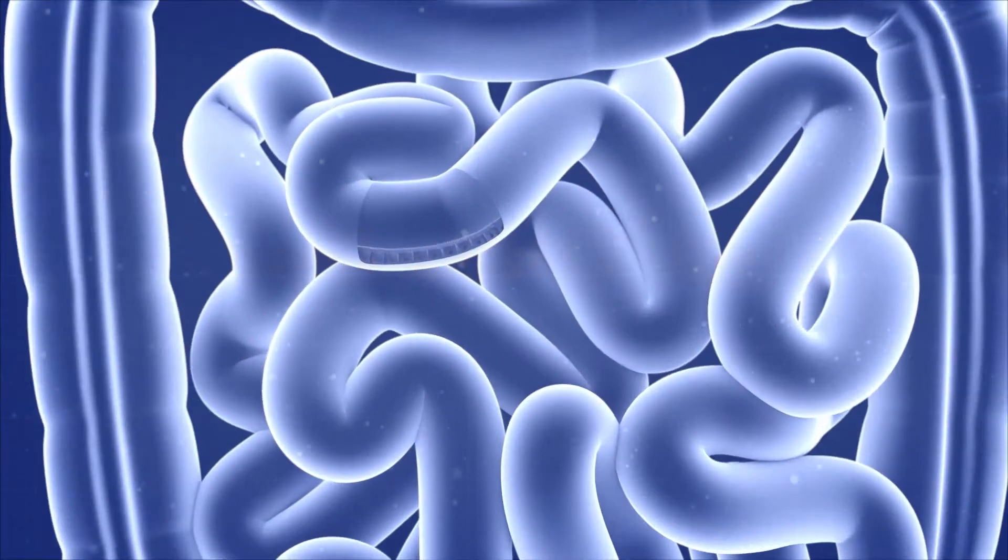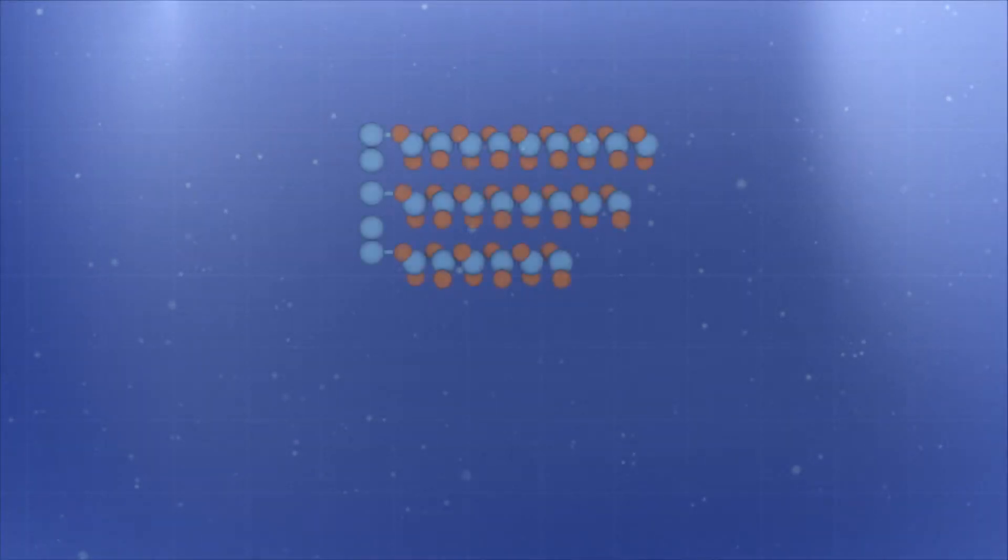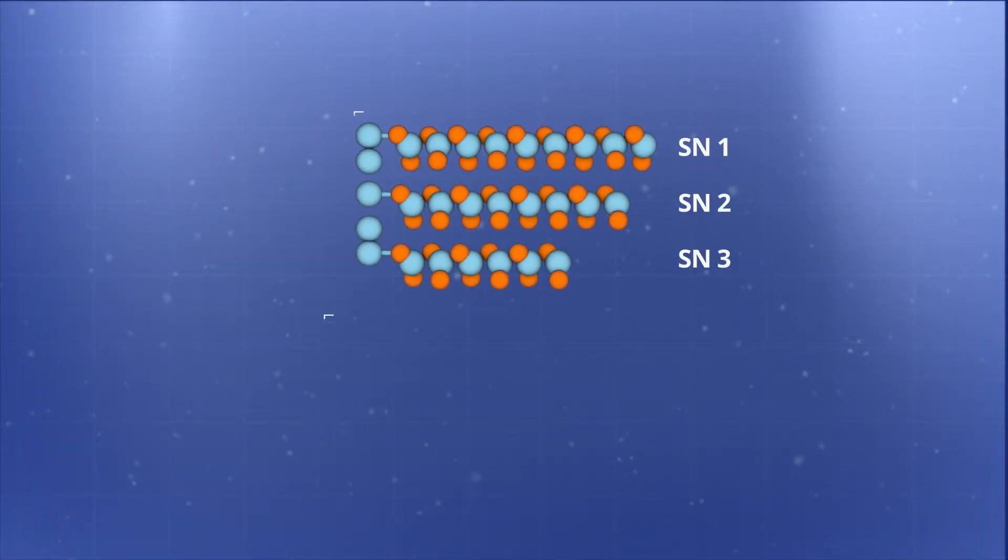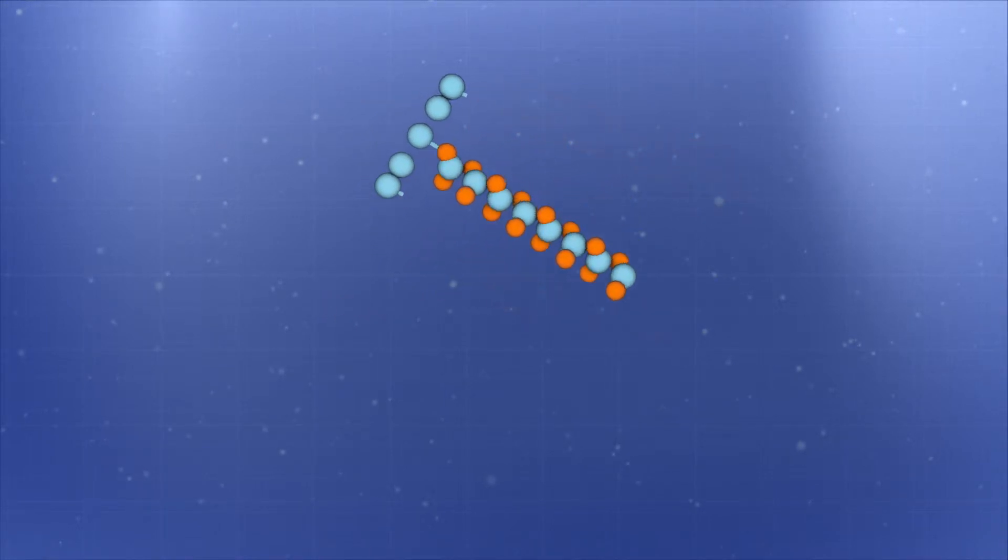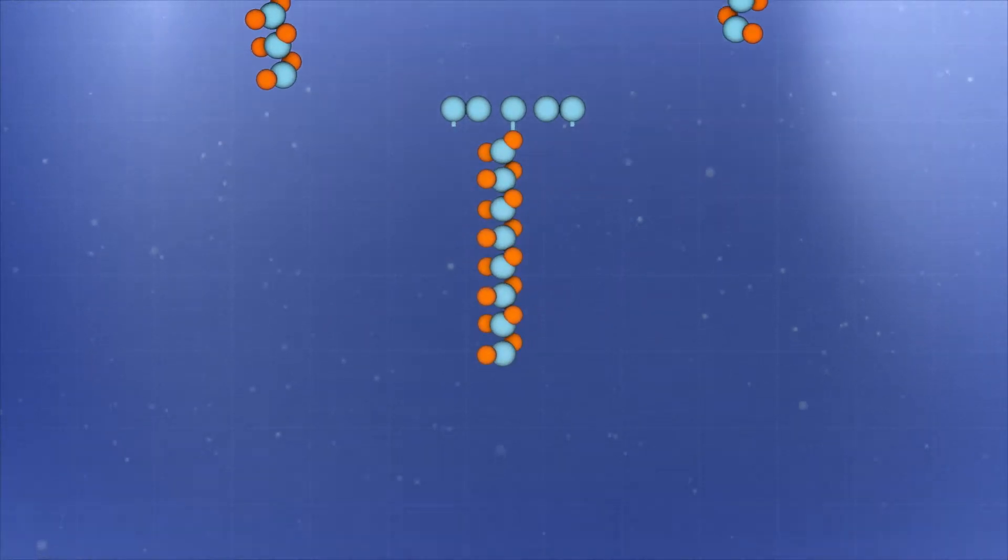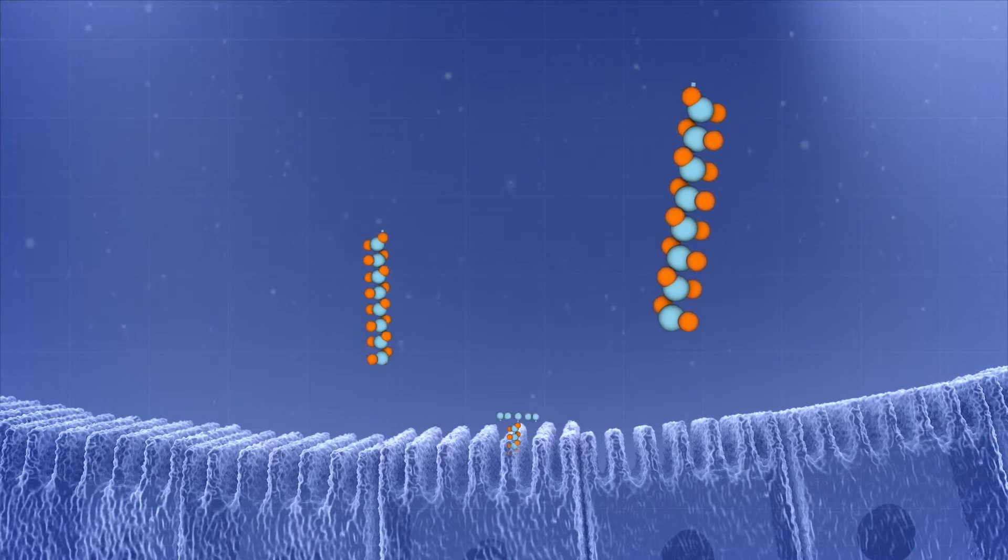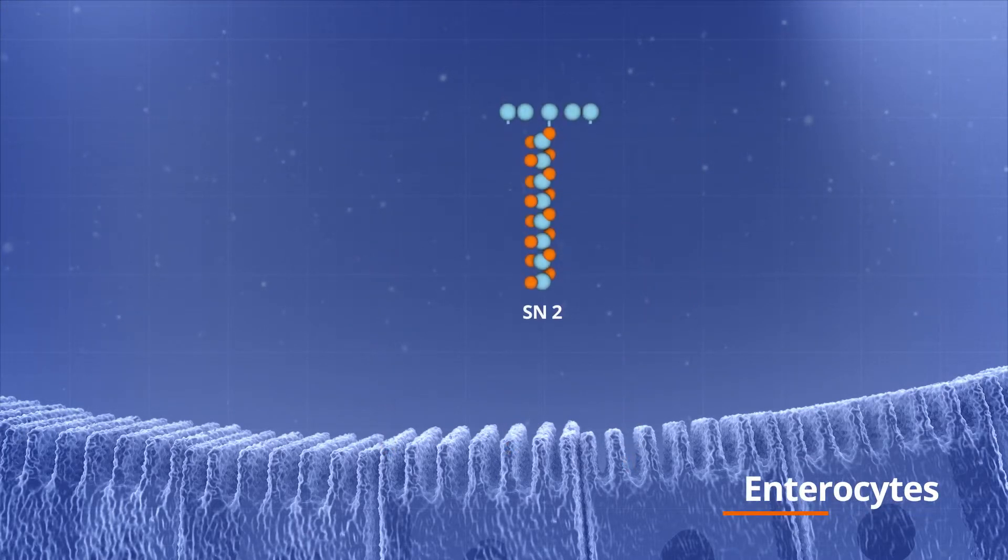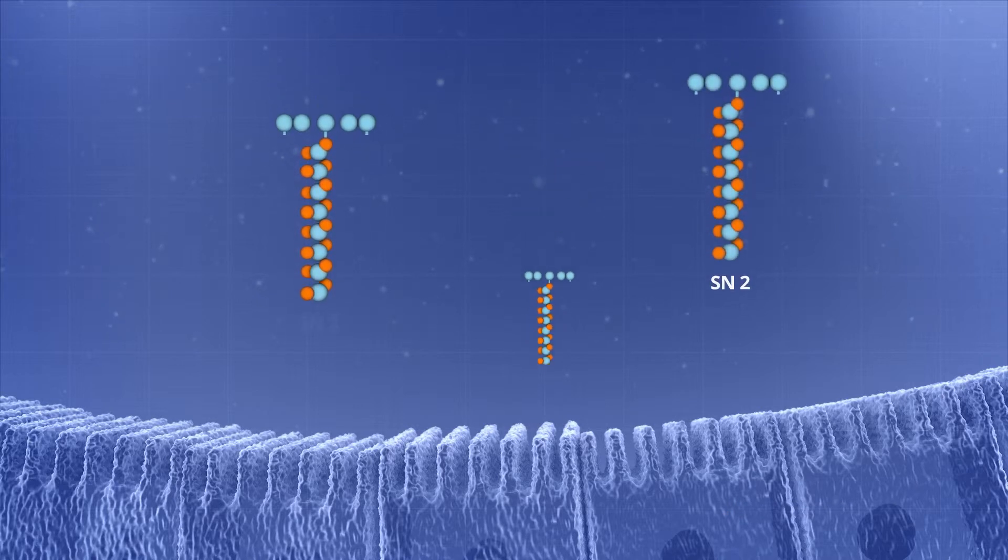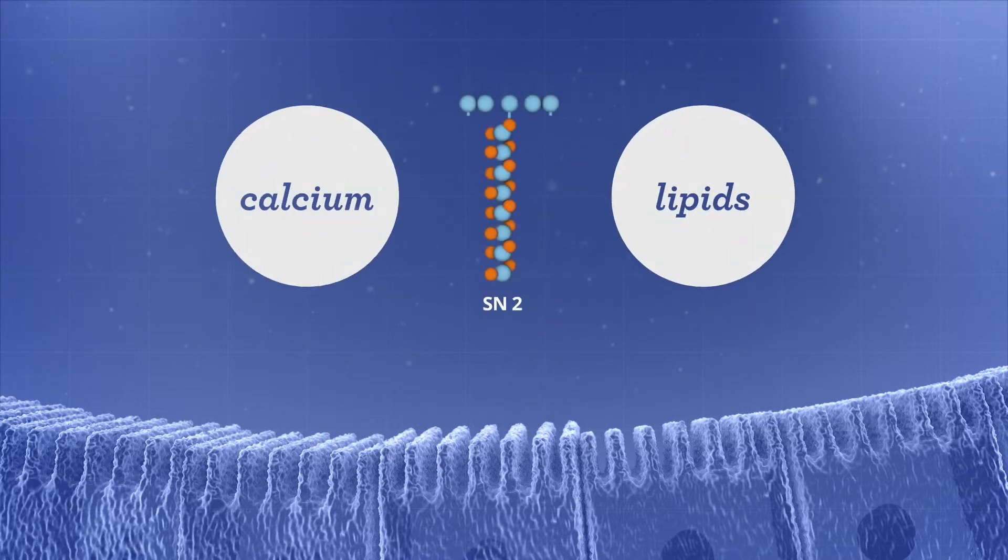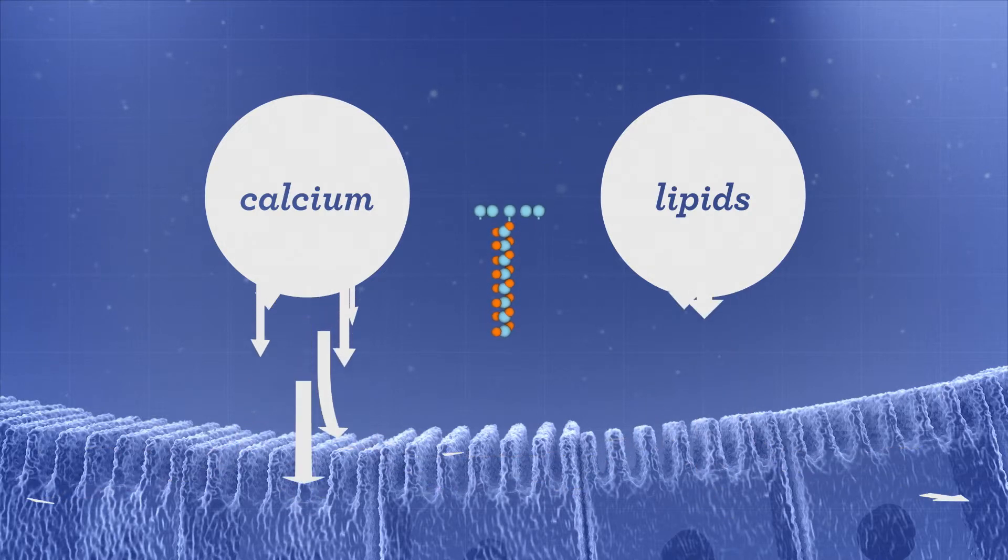In the gut, the enzymatic cleavage of triglycerides with palmitic acid at the SN2 position induces SN2 monoacylglyceride and free fatty acids that can be absorbed by the gut cells, enterocytes. A higher proportion of palmitic acid on the SN2 position has also been associated with enhanced calcium and lipid absorption.